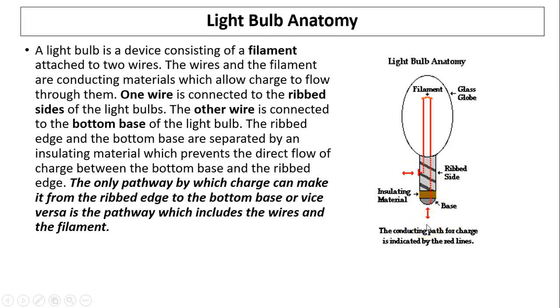So the only pathway by which charge can make it from the ribbed edge to the bottom base or vice versa is the pathway which includes the wires and the filament. So the current can come from here and go out at the base, or from the base go out at the side.